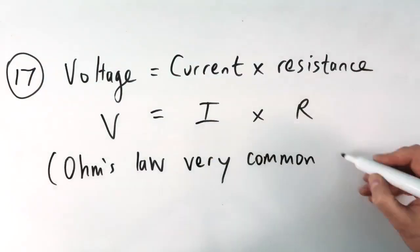Seventeen, voltage equals current times resistance. That's Ohm's law, it's a very common equation.